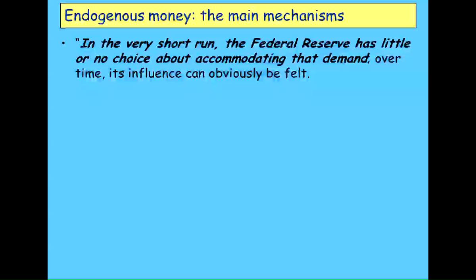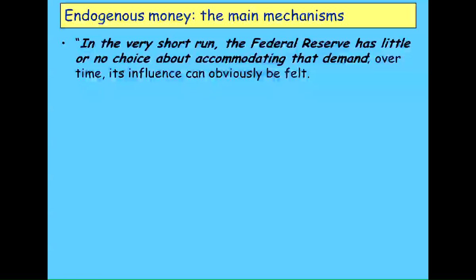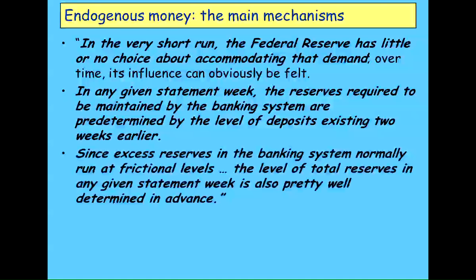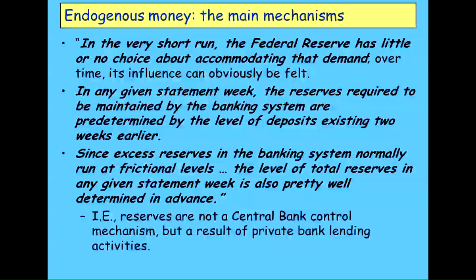Because they have to accommodate the demand for reserves, and the reserves required are actually determined by the deposits that were there two weeks earlier. Writing back in 1969, there was a two-week time lag. Now if you have loans creating deposits, there's money in the system which can be borrowed by any bank that finds itself at its reserve limit later on. So the actual process of creating loans and deposits also generates money which can turn up as reserves in the banking sector later. Excess reserves are normally at frictional levels; the total level of reserves is pretty much predetermined.